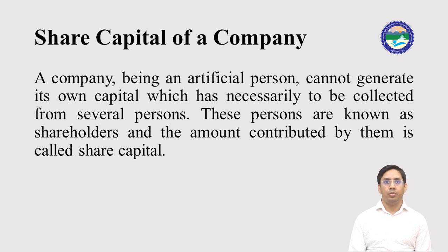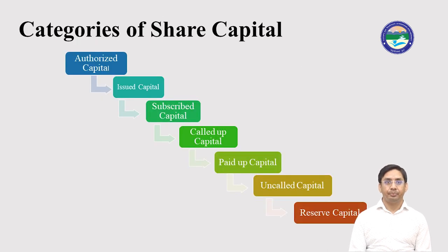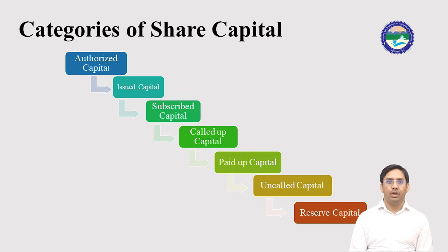Authorized capital means the entire maximum amount of money which a company can generate from the public. That amount is called authorized capital, and it is also shown in the Articles of Association. This is the maximum amount which the company can generate from the public. Since a company cannot collect all the money at one time, it divides the authorized capital according to its future prospects.